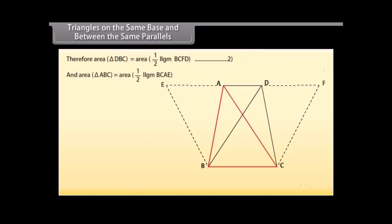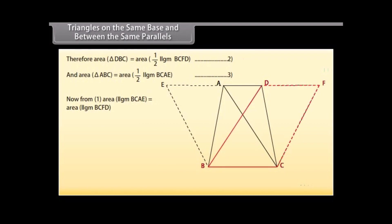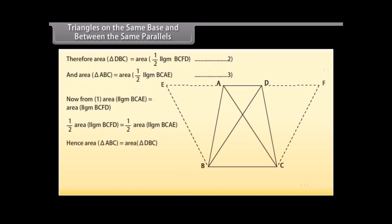And area of triangle ABC is equal to half of area of parallelogram BCAE — mark it as 3. Now from 1, area of parallelogram BCAE is equal to area of parallelogram BCFD, which implies that half of area of parallelogram BCFD is equal to half of area of parallelogram BCAE. Hence, area of triangle ABC is equal to area of triangle DBC.